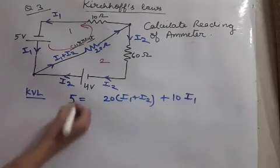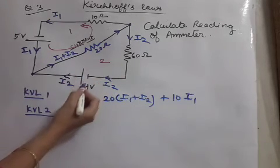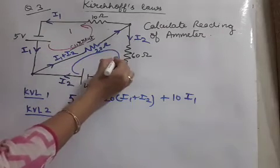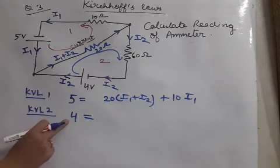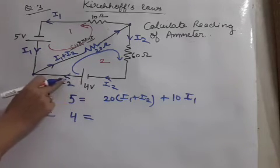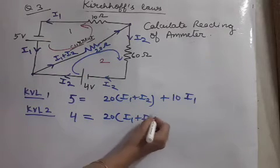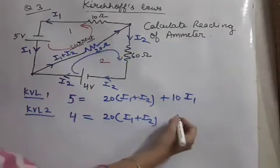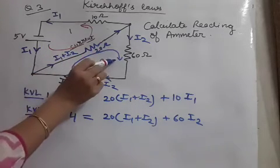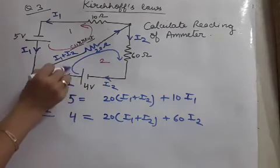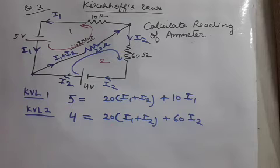Now let us make KVL equation for the second loop. In this second loop, battery is here. So from positive, we have to take the current direction. KVL says battery voltage equal to IR. So after 4 volt, we have first resistance 20. In this, the current is I₁ plus I₂. And next resistance is 60, and in this the current is I₂. And because R direction, that means the direction from the battery positive direction and other all currents are in the same direction, everything is positive.